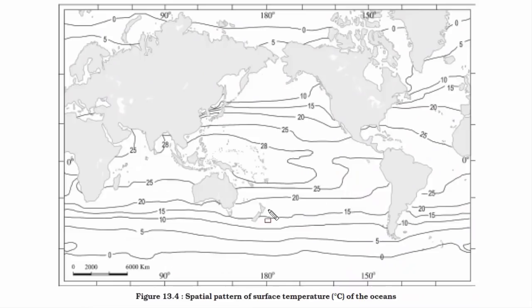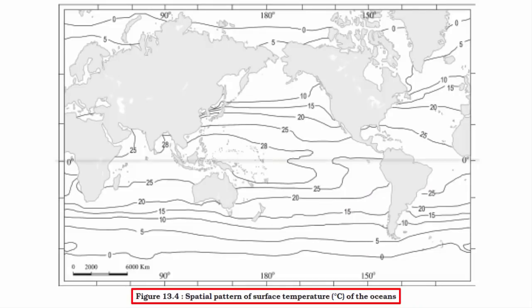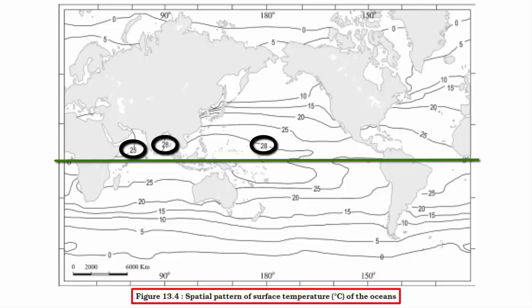Looking at figure 13.4, which shows the spatial pattern of surface ocean temperature, at the equator the ocean water is warm, but as we move away temperature drops. However, the region showing 25 to 28 degrees Celsius is found in the Northern Hemisphere due to the existence of nearby landmass. This elevated temperature is only found in the Northern Hemisphere, since landmasses are concentrated there. Therefore, the highest ocean temperature is not recorded at the equator but slightly towards the north of it.